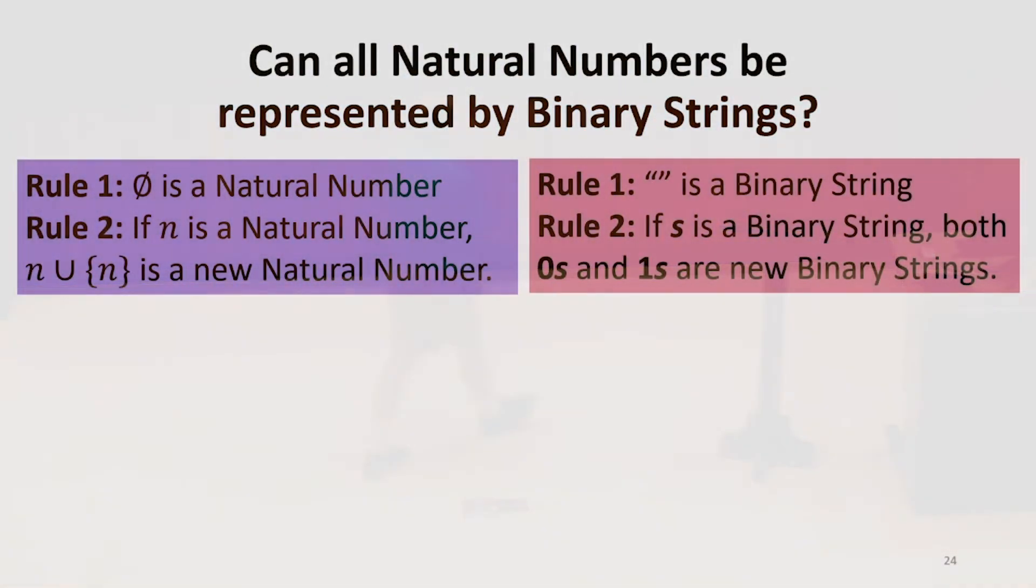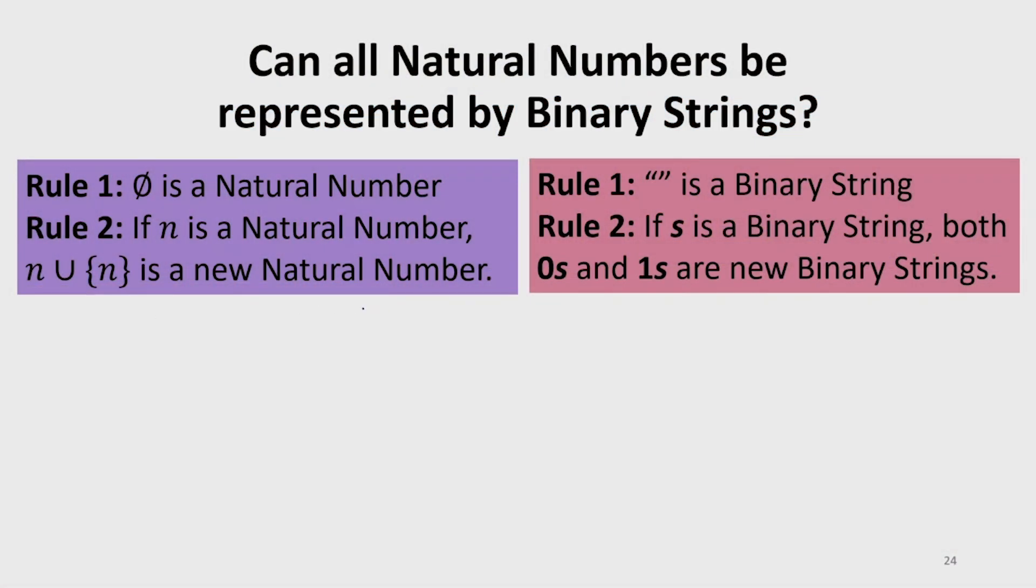So we start with empty string. By the rule, now both zero and one are. By rule two, now for both of those, we can add a zero in front. So now from this one, we get zero, zero, and one, zero. And from this one, we get zero, one, and one, one.